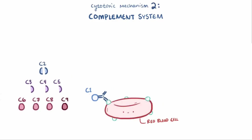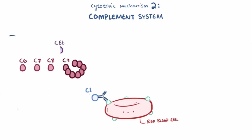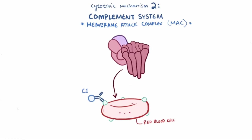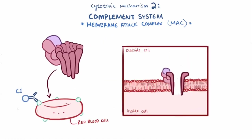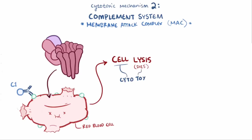The second cytotoxic mechanism requires us to follow the complement system through to the end. C5b, C6 through C8, and a bunch of C9 come together to form the membrane attack complex, or MAC. The MAC attacks the cell by inserting itself into the cell membrane, punching a hole or creating a channel that allows fluid and molecules to flow in and out of the cell. Due to the osmotic difference, fluid rushes into the cell, and the cell swells and eventually bursts — called cell lysis — and it dies. This is where the name cytotoxic comes from.